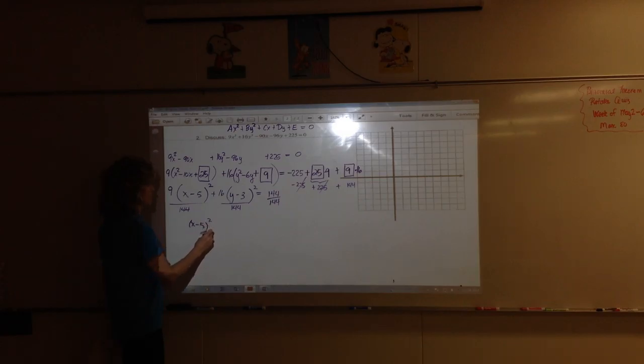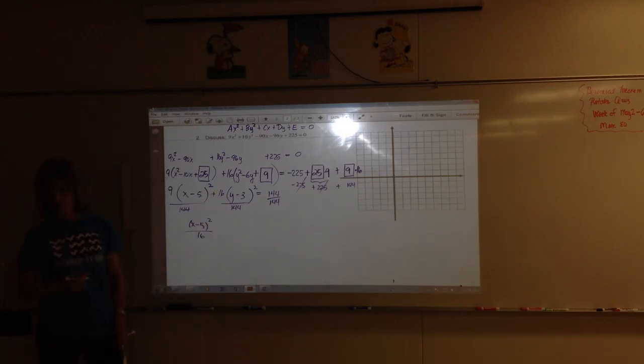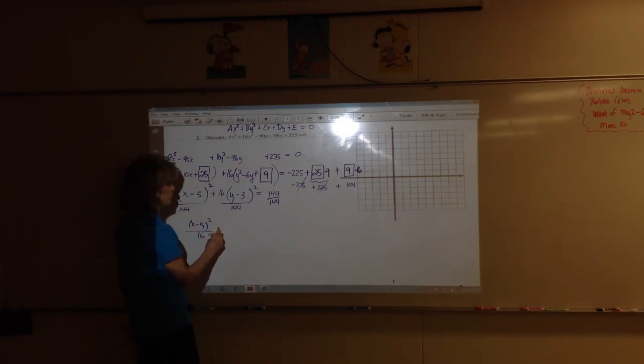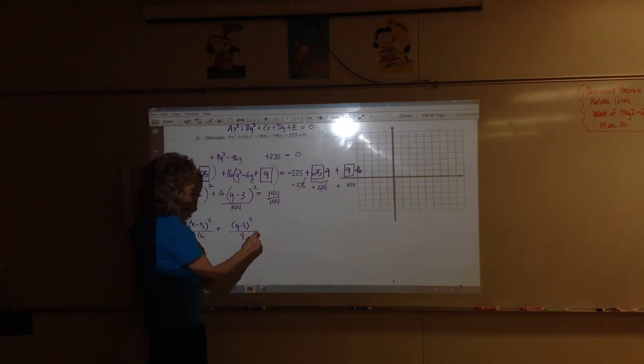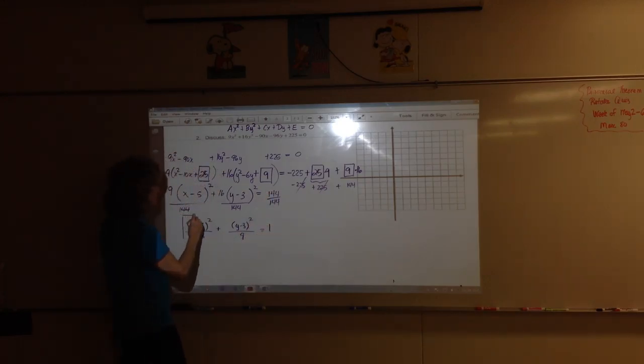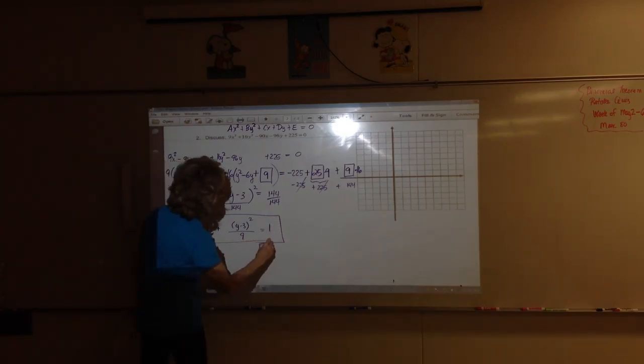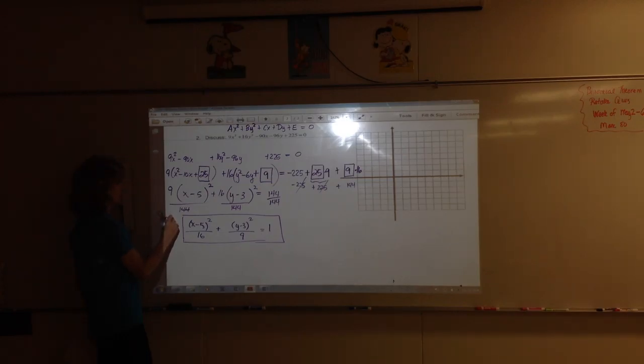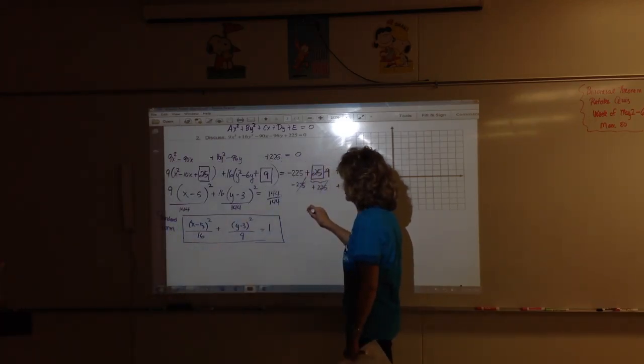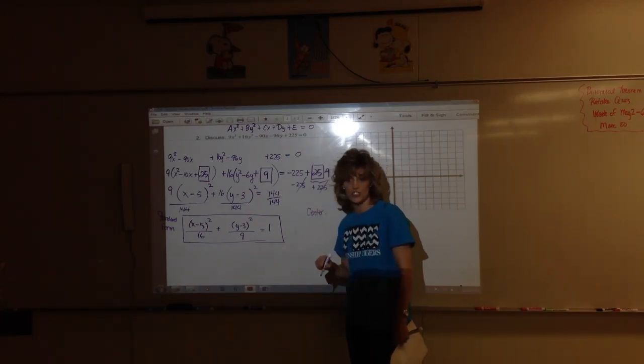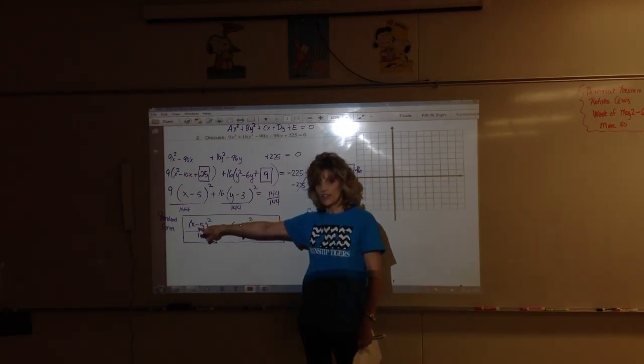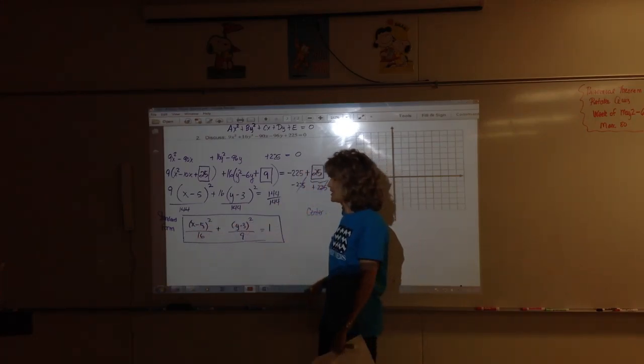Is that standard form? It has to equal one. Standard form for an ellipse has to equal one. You've got to divide every term on both sides by 144. Nine divided by 144, reduce that fraction to one sixteenth. So I'm going to write one times X minus 5 squared over 16. Do 16 divided by 144, reduce that fraction to one ninth. So one times Y minus 3 squared over 9, and over here equals 1. Put it in a box. This is the standard form equation for the ellipse.